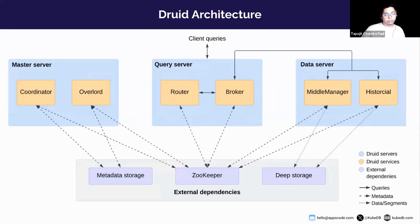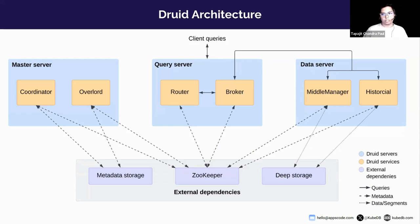Druid has a very distributed and elastic architecture that is cloud-friendly and easy to operate. This design includes enhanced fault tolerance, so an outage of one component does not immediately affect the other components.